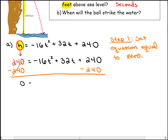We're going to subtract 240 from both sides, and that gives us 0 is equal to negative 16t squared plus 32t. The 240 minus 240 gives plus zero, so we just leave the polynomial as negative 16t squared plus 32t.